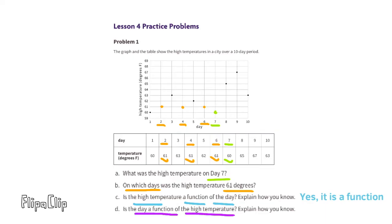D. Is the day a function of the high temperature? Explain how you know. Day could not be a function of temperature, as there are multiple days that have the same high temperature. There would be different outputs for the same input.